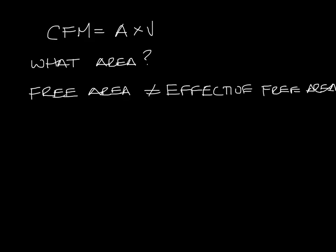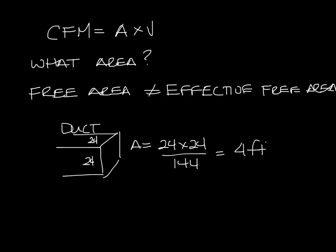So let's say we have a 24 by 24 grill, or let's actually call it a 24 by 24 duct to start with. The area is 24 times 24 divided by 144 to convert it into feet, or four square feet.